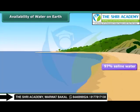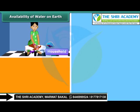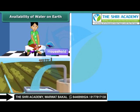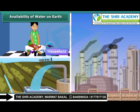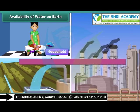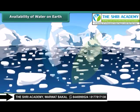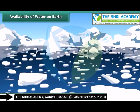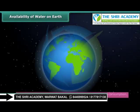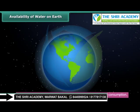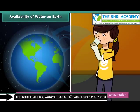However, 97% of the total water present on earth's surface is saline water. Hence, it is fit neither for household consumption nor for agricultural and industrial use. The remaining 3% is fresh water, two-thirds of which is frozen in glaciers and polar ice caps. Only 0.006% of all the water present on earth is available for consumption.